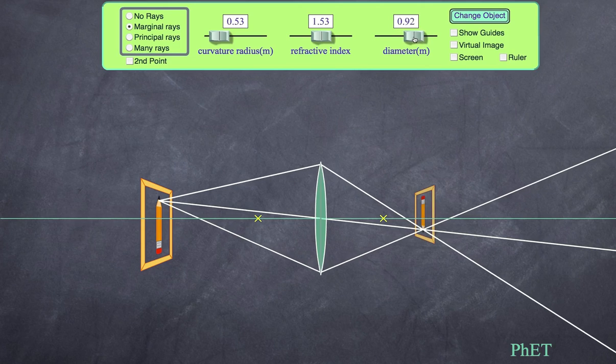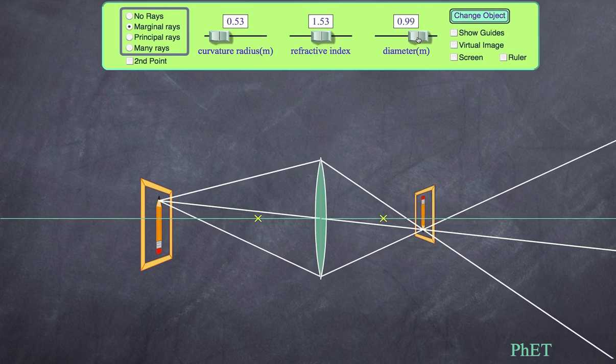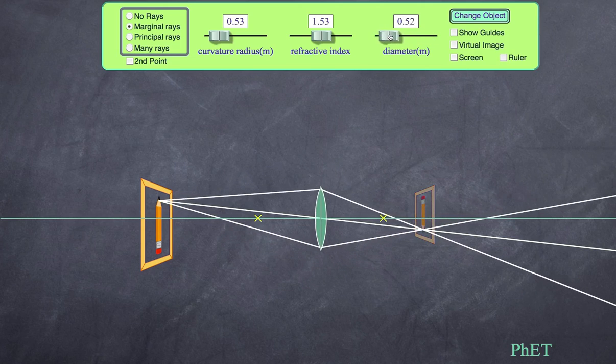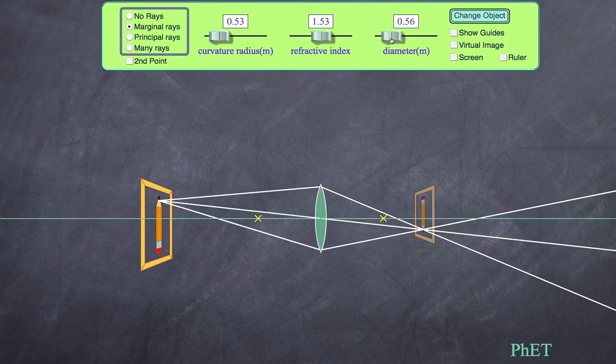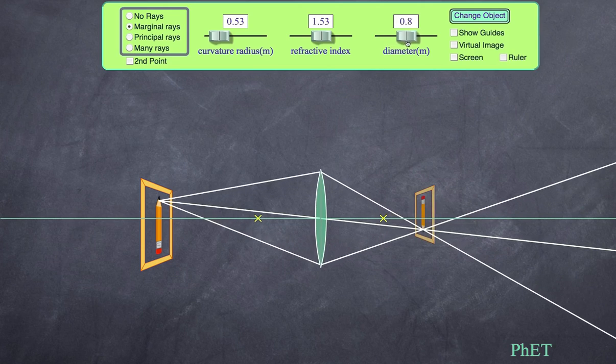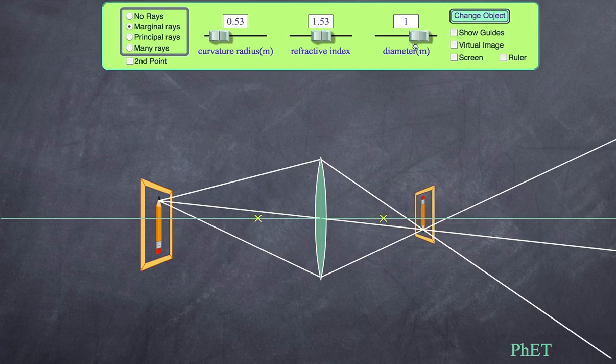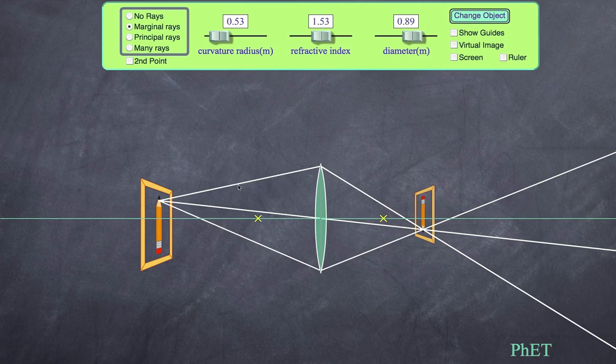If I move the diameter, that really looks at the size of it. You can see in this case it actually does not affect the image whatsoever - the image is still there. But the only thing it might affect is how bright the image is.